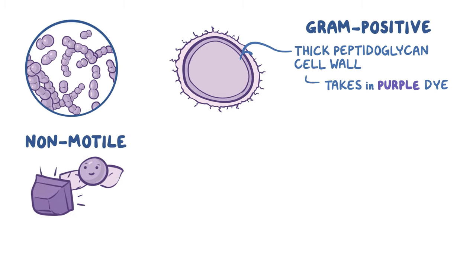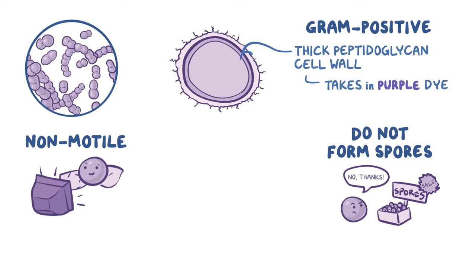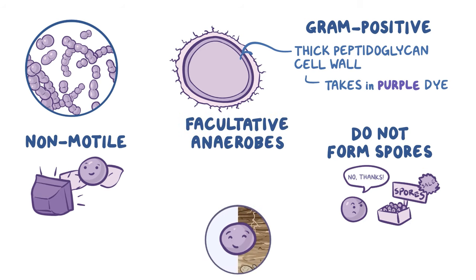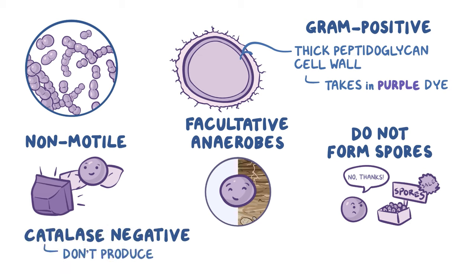They're non-motile and don't form spores, and also they're facultative anaerobes, meaning they can survive in both aerobic and anaerobic environments. Finally, they're catalase-negative, which means they don't produce an enzyme called catalase.